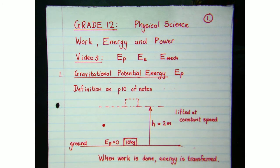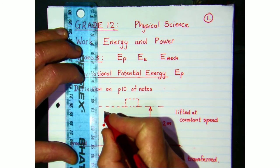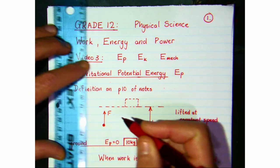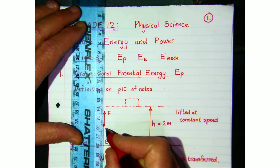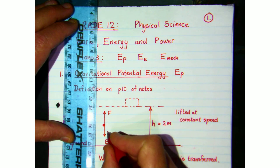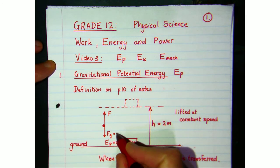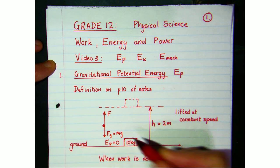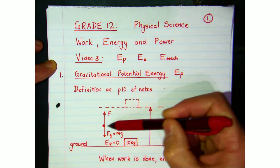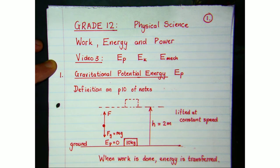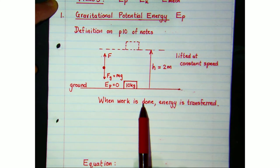If we're going at constant speed — a bit of revision about forces acting on a moving object — we've got a lifting force, some applied force to lift the box, and the gravitational force acting in the opposite direction. These two would have equal magnitudes. We know that the gravitational force is mass times the acceleration due to gravity. So we're lifting the box through a vertical height of two meters, doing work on the box by the applied force. When work is done, energy is transferred.